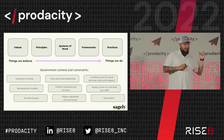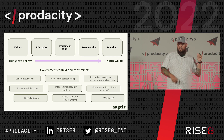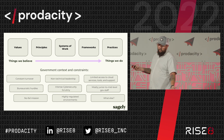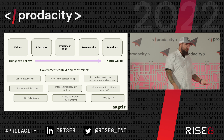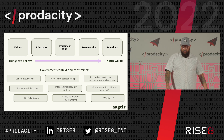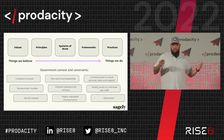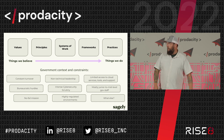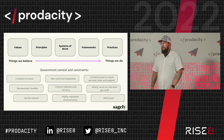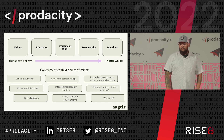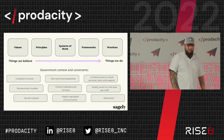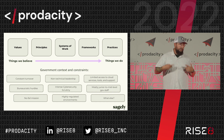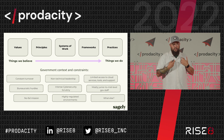Here are a bunch of government contexts and constraints that make your life tough: constant turnover, generally non-technical leadership, limited access to cloud services and tools, bureaucratic hurdles, more intense cybersecurity scrutiny, mostly junior to mid-level staff, a no-fail mission, highly regulated environments, budget constraints, fear of failure, and cultural issues. As we talk through some of the practices we're about to cover, think about these contexts and constraints and whatever else is unique to your organization.